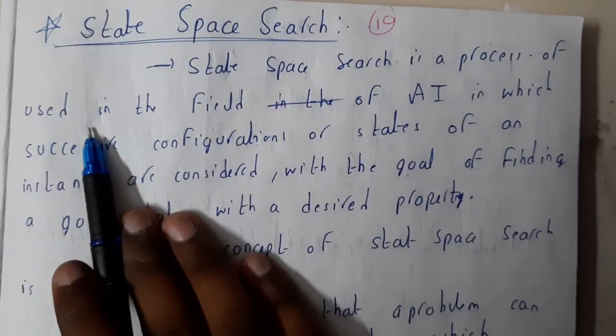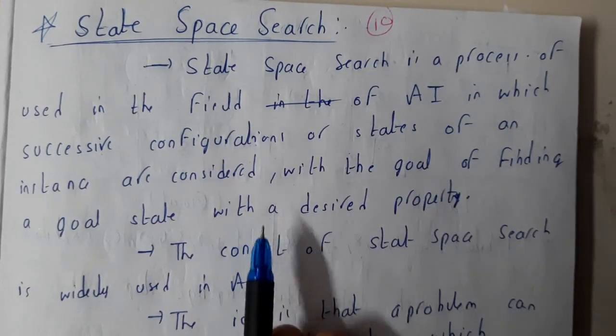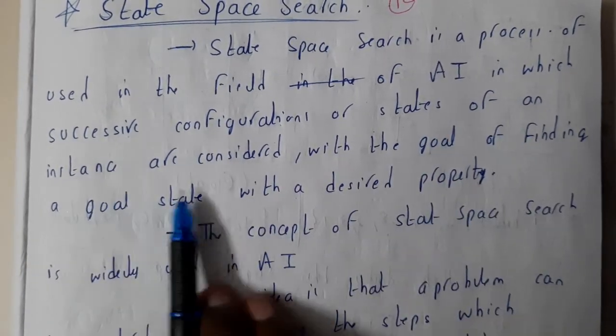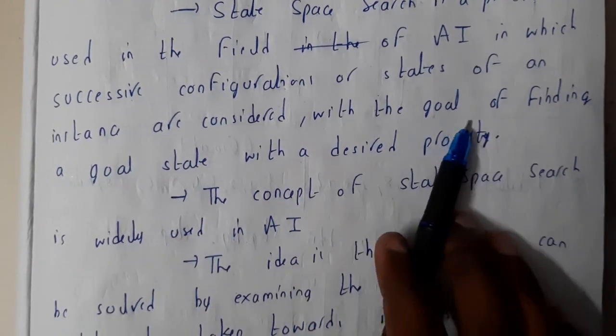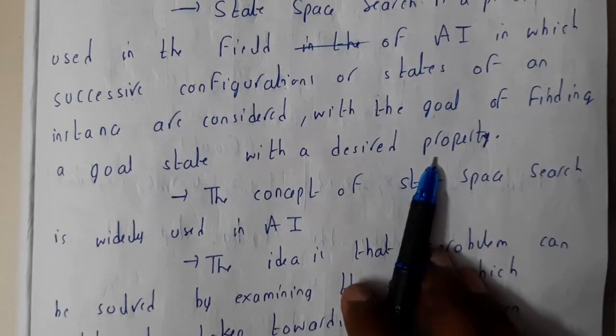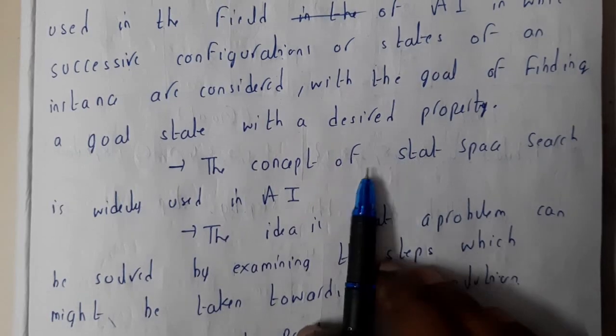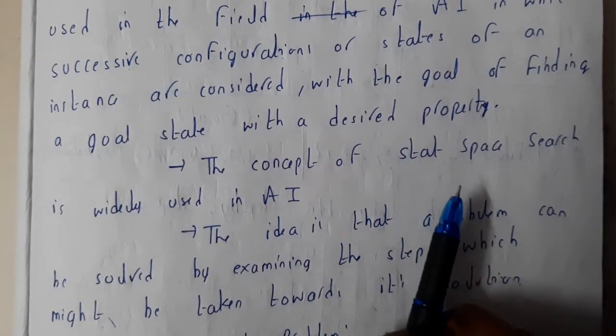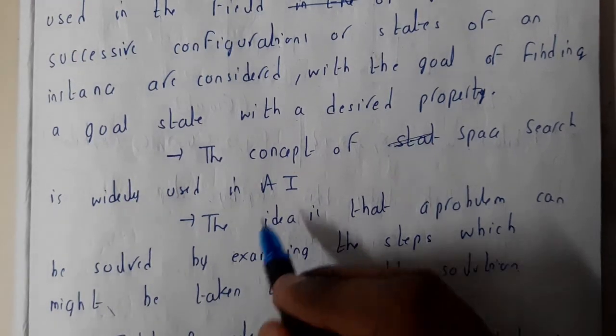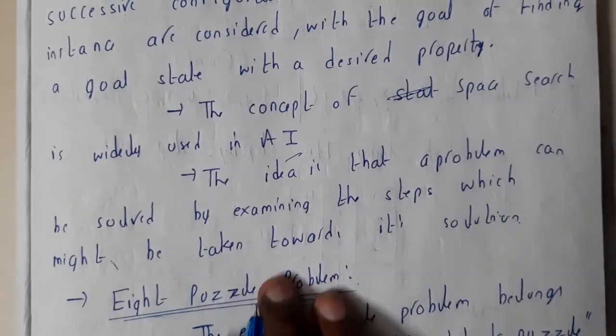The goal is finding a goal state with the desired properties. To reach the goal node, we'll be using this. The concept of state space search is widely used in AI. The idea is that a problem can be solved by examining the steps which might take toward the solution.